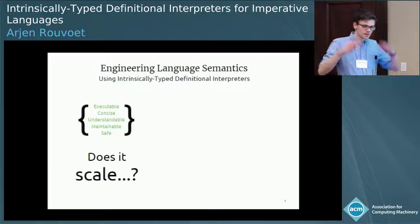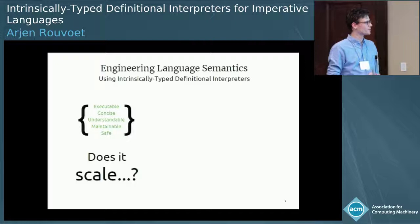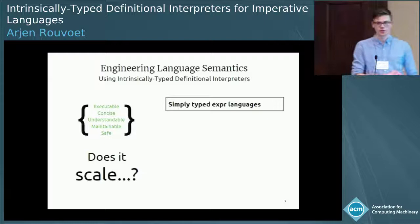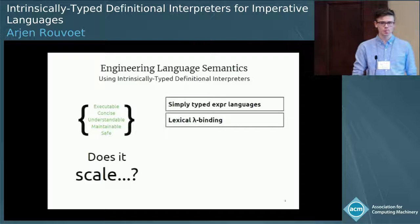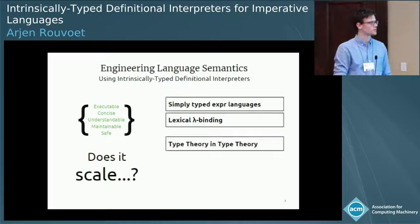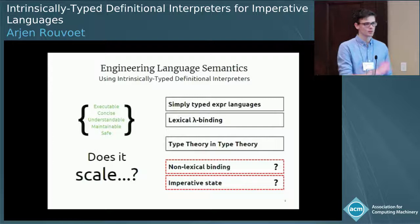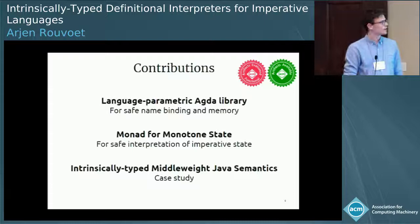The main question of this paper is, can we take this approach, which seems to be appealing for simple cases, and scale it up? It seems to be well known how we can do simply typed expression languages and languages that have lexical binding. There's work by others on scaling this along the axis of fancier type systems. But if you look at features such as non-lexical binding in languages and imperative states, it's unclear how to treat these. So that is where our main contributions are.